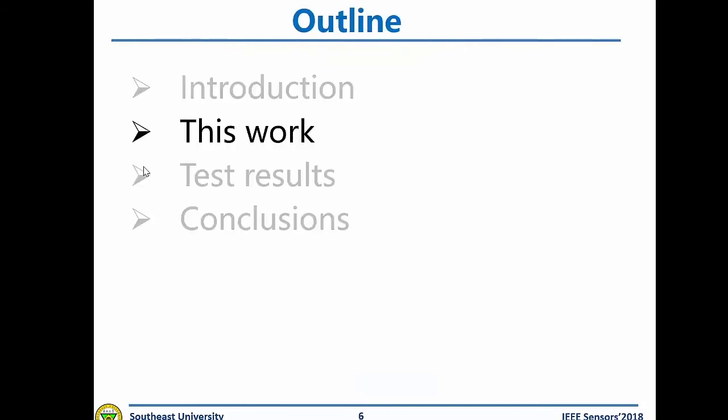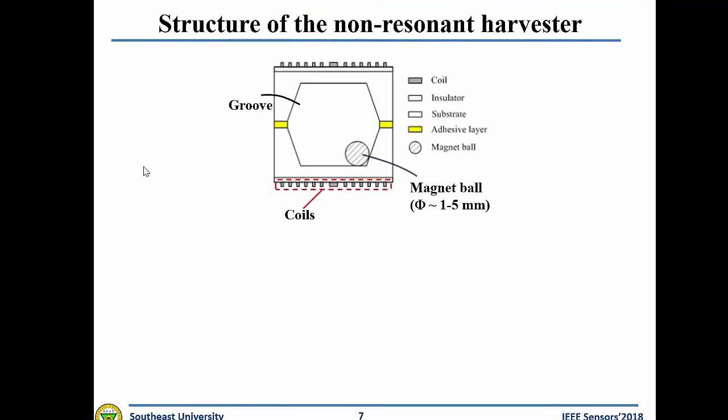In the next part we introduce the non-resonant energy harvester presented in this work. As you can see, it consists of two substrates and a permanent magnet ball. The two substrates have the same structure, mainly including a groove located at the bottom side and a group of coils at the top side. The two grooves combine together to form a cavity using an adhesive layer, and the magnet ball is placed inside. The ball can move freely in the cavity under vibration, leading to changes in magnetic flux across the coils, thus converting vibration energy into electricity.